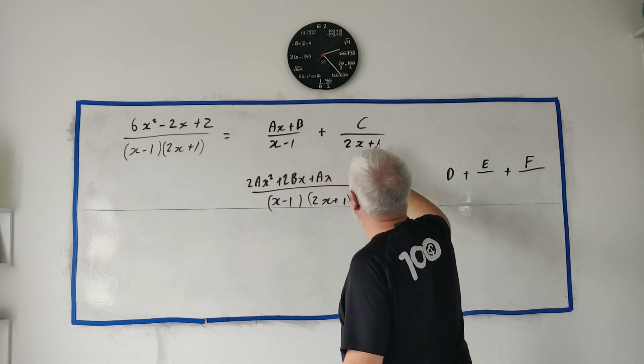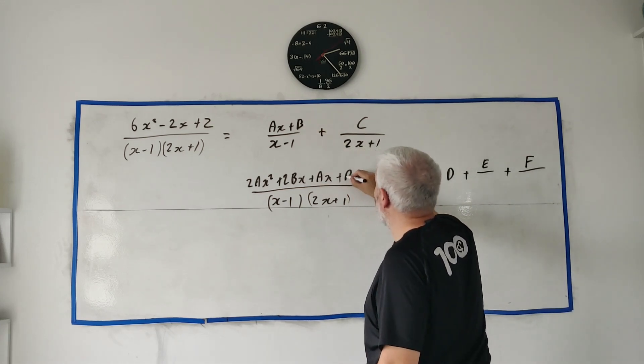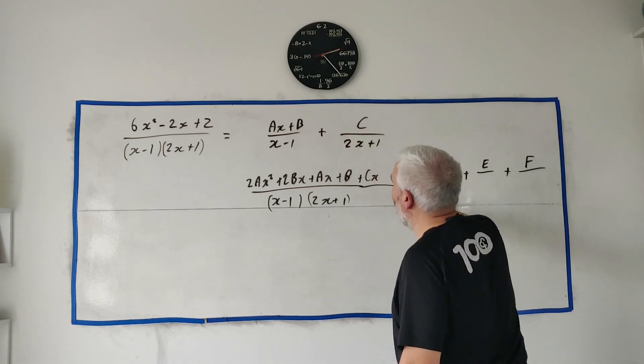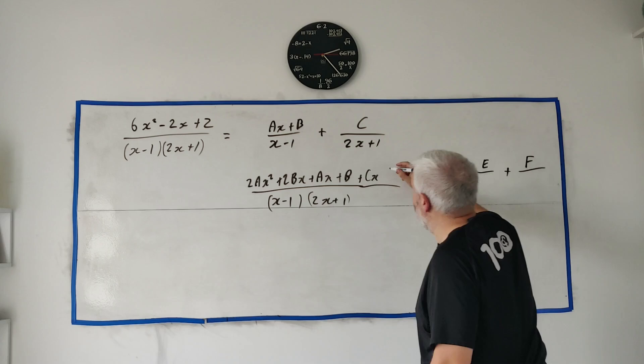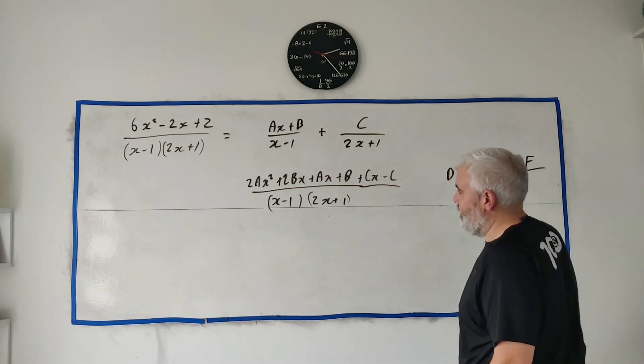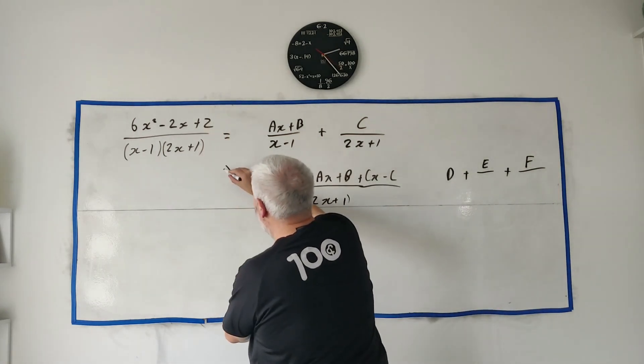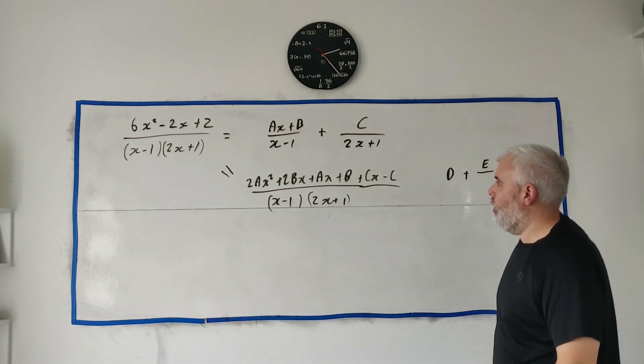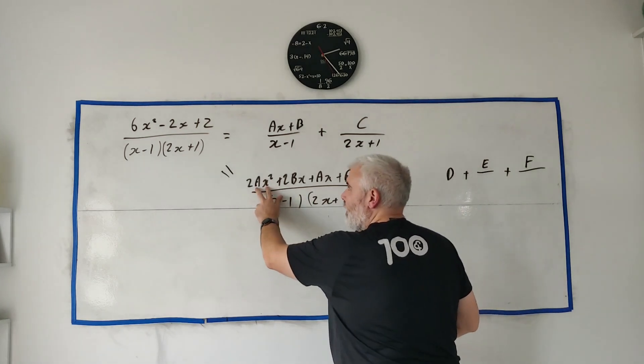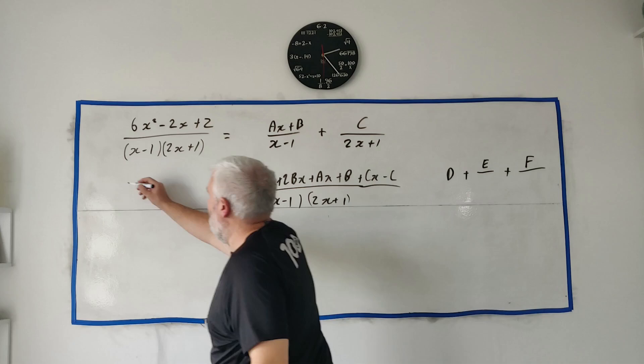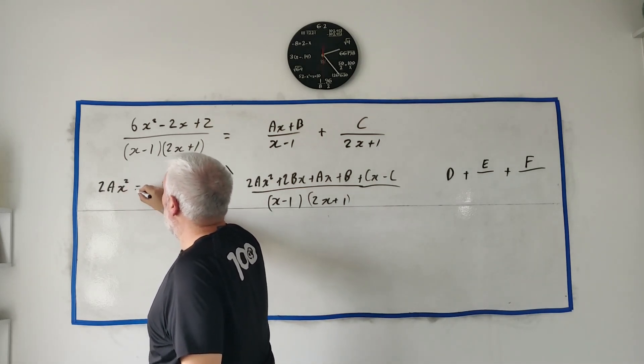The top row, let's expand it all out: 2x times ax, that'd be 2ax squared, 2x times b is 2bx, plus ax, 1 times b plus b, plus c times x, and then minus 1 times c so minus c. Now what we know is this is still equal to up here. That means all the x squares have to equal all these x squares.